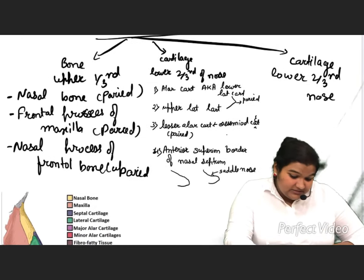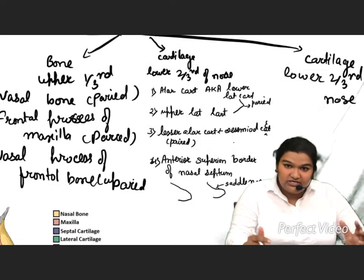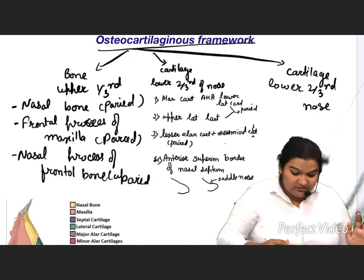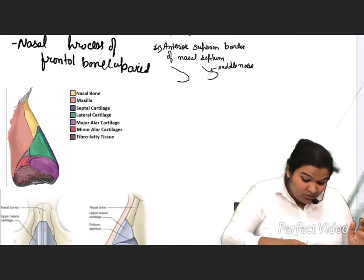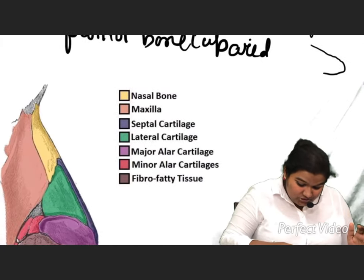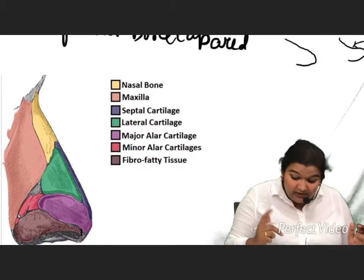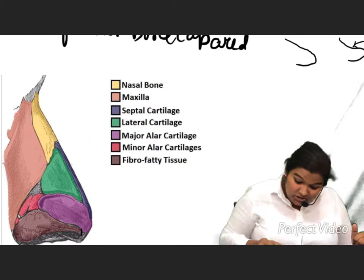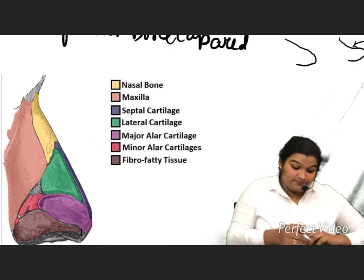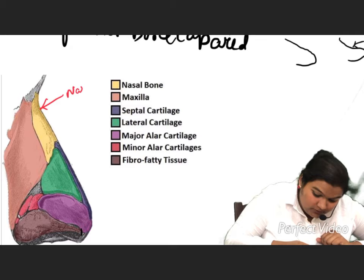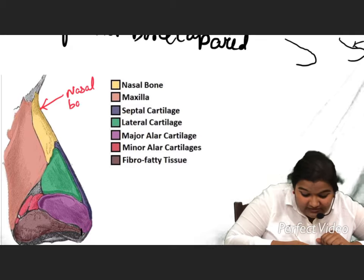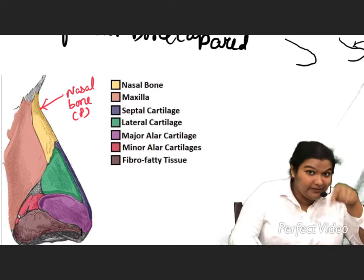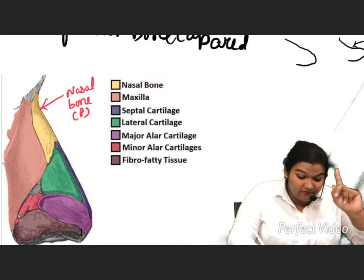Let us move towards the image. I will use red for the bone and black for the cartilage. So, this is the nasal bone — it is a paired bone. Now, we have the frontal process of maxilla, which is also a paired bone.